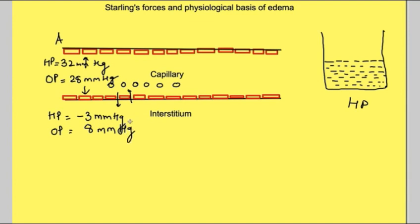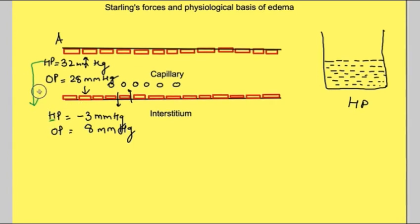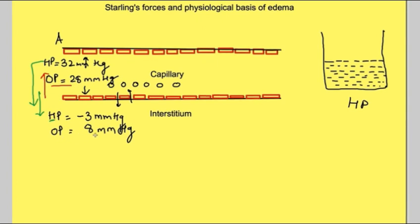Let us work out which force moves water in which direction. Hydrostatic pressure in the capillary pushes water outside. Hydrostatic pressure in the interstitial space, since it is negative, acts as a pull force and also causes movement of water outside the capillary. Osmotic pressure in capillaries pulls water inside the capillaries, while osmotic pressure in the interstitial space pulls water into the interstitial space — also causing movement of water outside the capillaries.